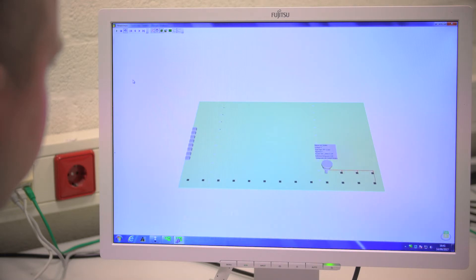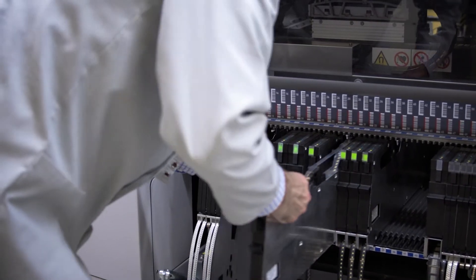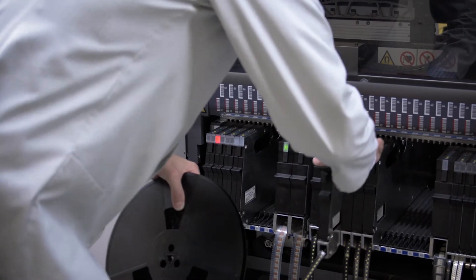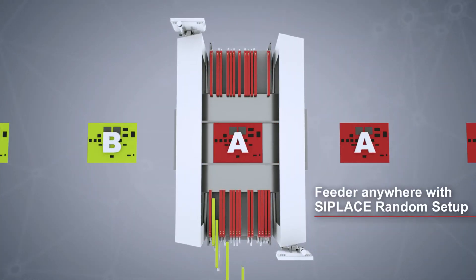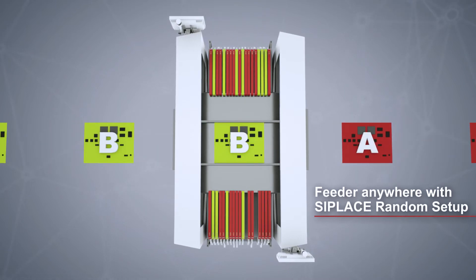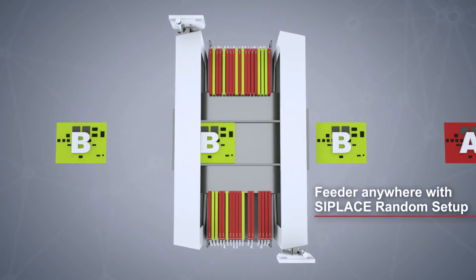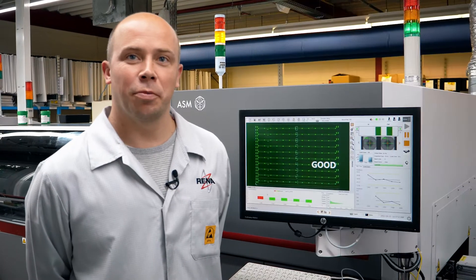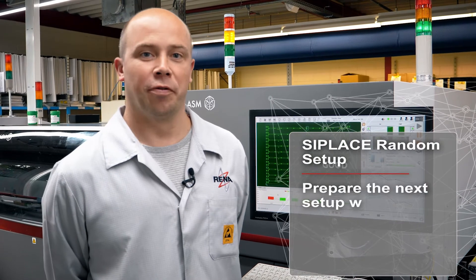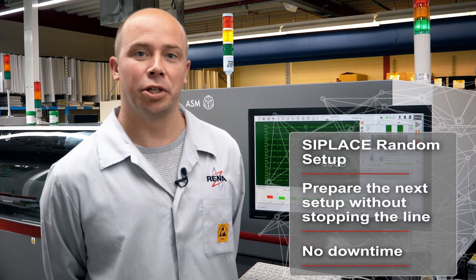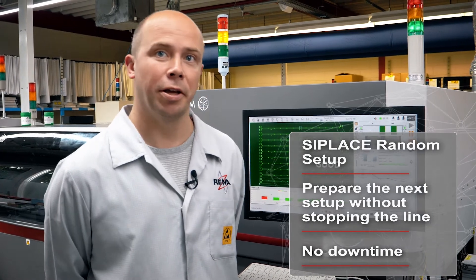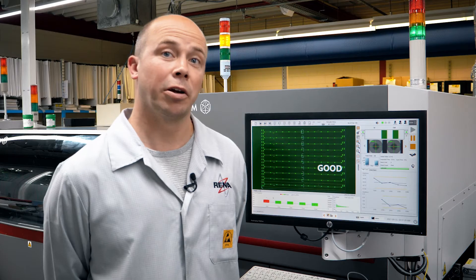Rina minimizes setup times using C-Place random setup. Feeders can be inserted into any free slot without worrying about the position or having to interrupt production. The benefit of random setup is that we can already put feeders onto the machine without stopping it, so we can prepare the next setup already — basically no downtime and continuous production without stopping the line.